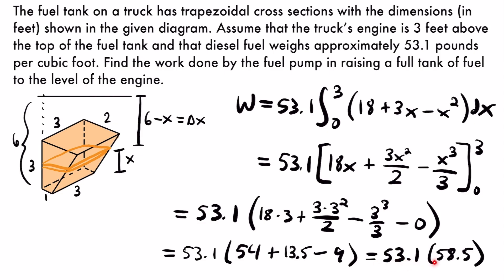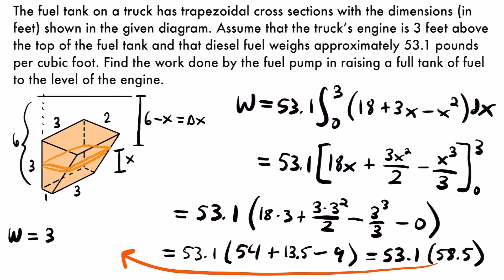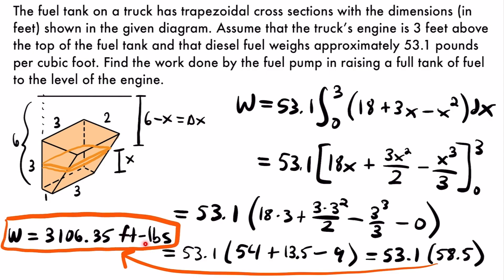53.1 times 58.5 gives us the final answer: the work done is equal to 3,106.35 foot-pounds. The units are foot-pounds because that is the unit of work when working with feet and pounds — we had the weight density of diesel fuel in pounds per cubic foot and the tank dimensions in feet, so our unit of work is foot-pounds, not the metric unit joules.